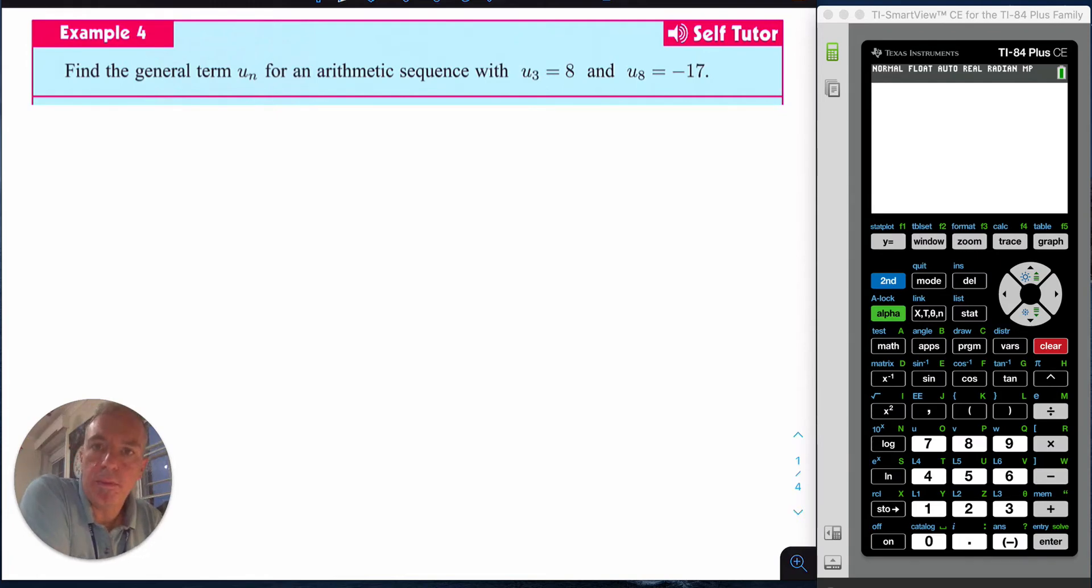This is a video about arithmetic sequences that end up giving you a system of equations. This happens when you're given two non-consecutive terms, for example u3 and u8, so you cannot find the common difference immediately.